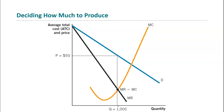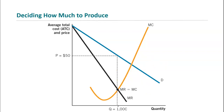For a monopolist, the picture changes slightly because they face the market demand curve. You're the only firm in the market, so the demand curve you see as a firm is the market demand curve — the downward sloping demand curve. Because of that, we see a marginal revenue curve beneath the demand curve. The picture changes a bit, but the process of deciding how much to produce is the same: choose output where marginal revenue equals marginal cost.